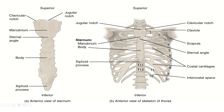The thorax is anteriorly bounded by the sternum. The parts of the sternum are the manubrium, the body, and the xiphoid process. The manubriosternal joint is also known as the sternal angle, and it corresponds with the lower border of T4. Many structural changes occur here: the beginning and termination of the arch of aorta, the trachea dividing into two principal bronchi, and deviation of the thoracic duct from right to left close to this sternal angle.